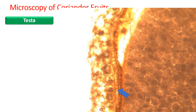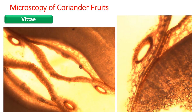The fruit also consists of a seed enclosed within the testa; you can see the testa cells arranged at the outer area. The vitae are oil glands, and coriander has only two vitae compared to fennel which has five. The vitae are located near the carpophore zone or near the raphae region, and this single vitae has been stained with Sudan Red 3.